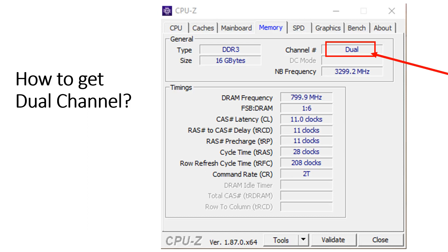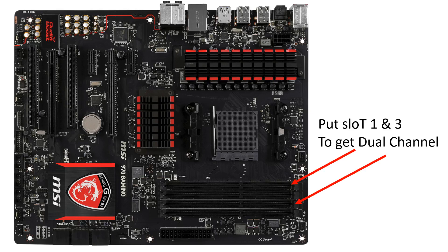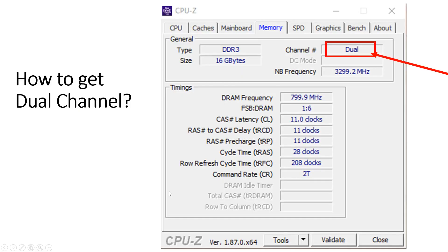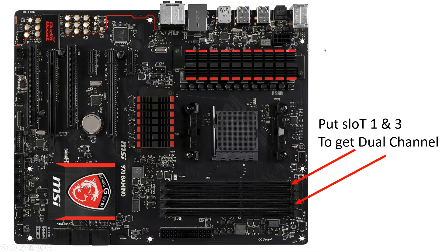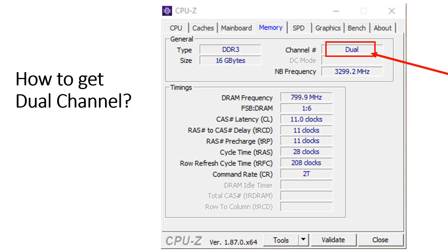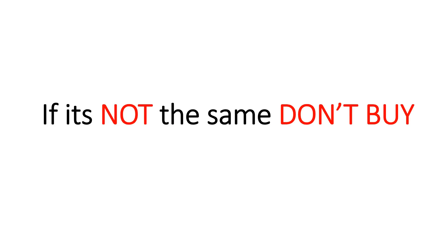Lastly, how to get dual channel. My mistake previously was putting sticks in slots one and two — that gives single channel. To get dual channel, you need to put sticks in slots one and three.